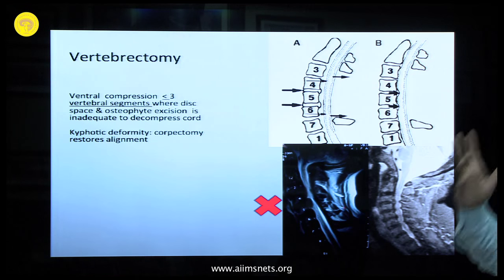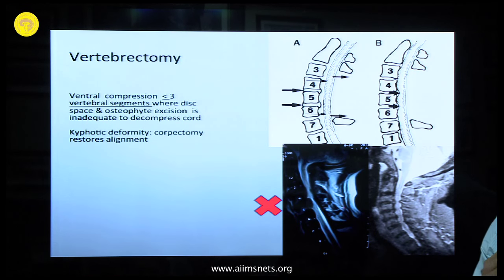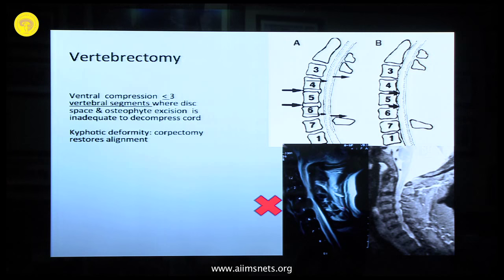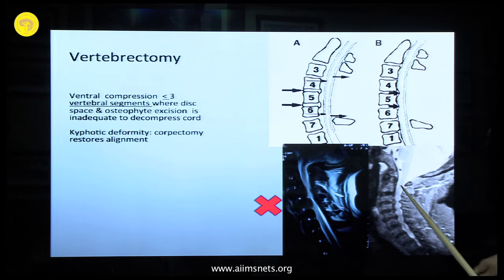When would you not do a vertebrectomy? If you are doing a corpectomy, anything more than three segments is too much. Less than three segments you could do a corpectomy, but anything more than three segments, it is much better to go from the posterior approach and do a laminoplasty if there is kyphosis, or a laminectomy depending on the situation. Definitely with long segment compression and canal stenosis — no corpectomy. Less than three segments is the recommended limit.